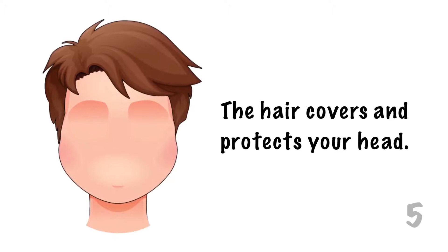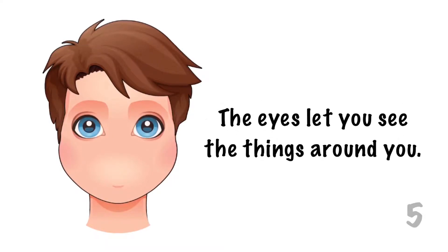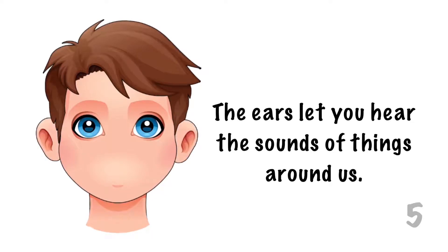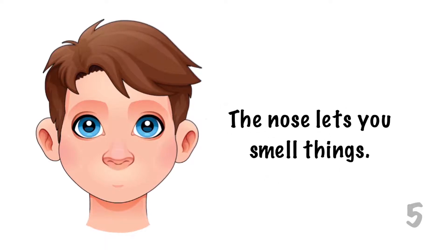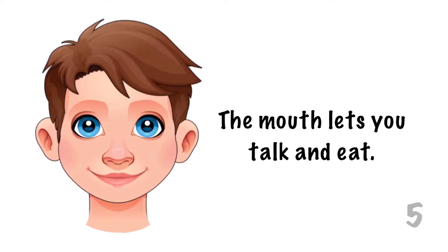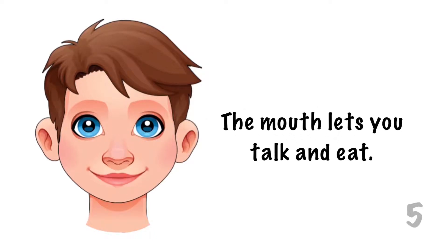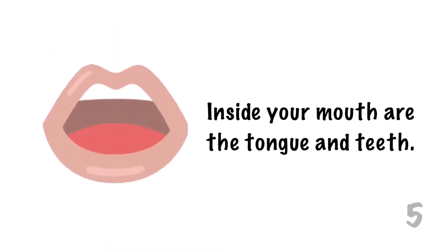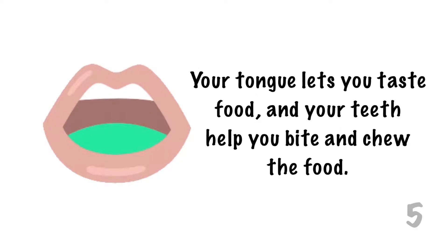The hair covers and protects your head. The eyes let you see the things around you. The ears let you hear the sounds of things around us. The nose lets you smell things. And the mouth lets you talk and eat. Inside your mouth are the tongue and teeth. Your tongue lets you taste food and your teeth help you bite and chew the food.